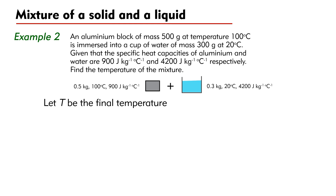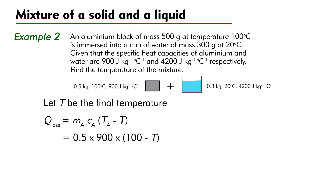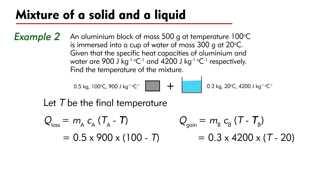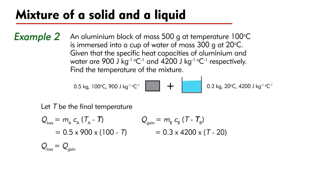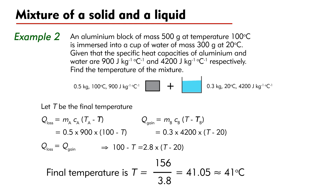Let T be the final temperature. Heat loss by the aluminium block is Q_loss equal to MA times CA times (TA minus T) equal to 0.5 times 900 times (100 minus T). Heat gain by water is Q_gain equal to MB times CB times (T minus TB) equal to 0.3 times 4200 times (T minus 20). Assuming no heat loss to the surroundings, by conservation of energy, Q_loss equals Q_gain, we have (100 minus T) equal to 2.8 times (T minus 20). The final temperature is T equal to 41 degrees Celsius.